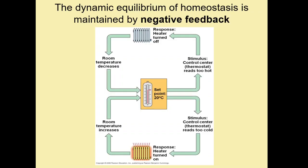When we come to temperature specifically, we can use this diagram that shows a home central heating system. It also shows the main mechanism that maintains homeostasis, which is negative feedback. The dynamic equilibrium of homeostasis is maintained by negative feedback. If you have a central heating system, it will come with a thermostat, and you will set that thermostat to the optimal temperature you want your room at — typically about 20 degrees Celsius.